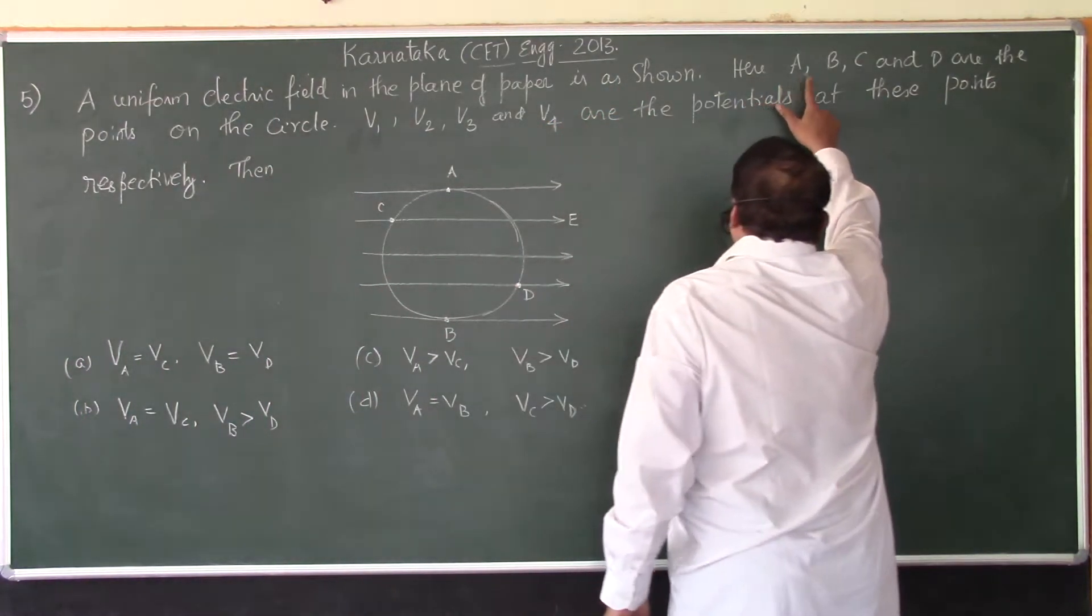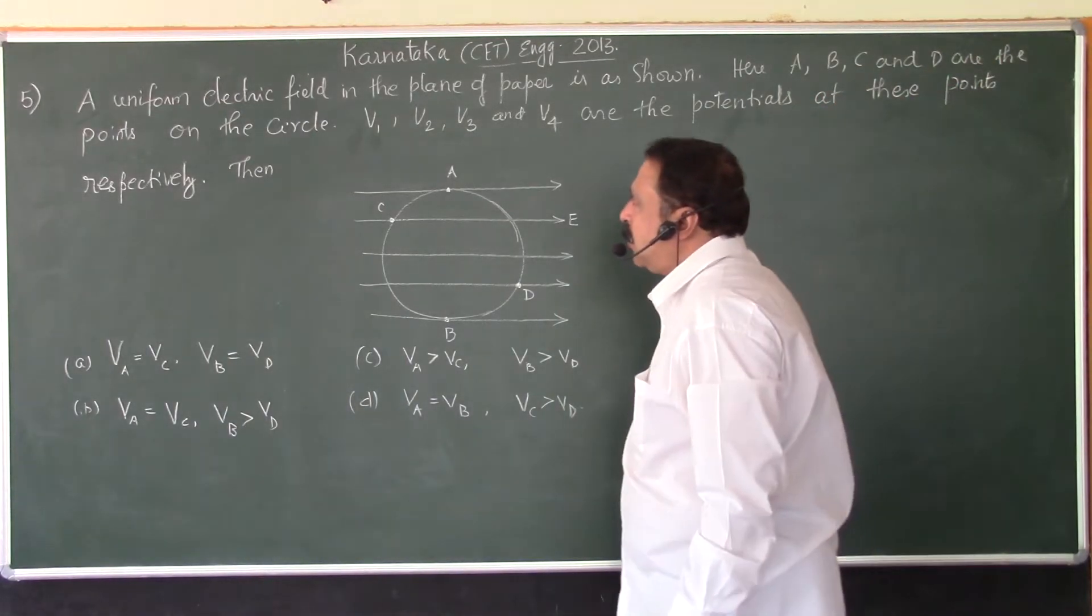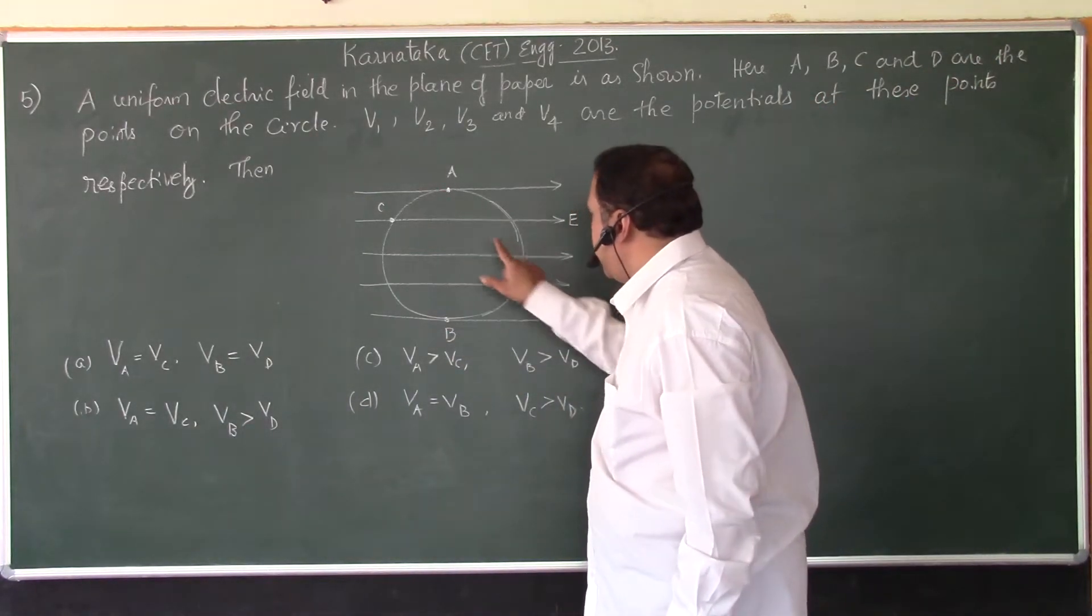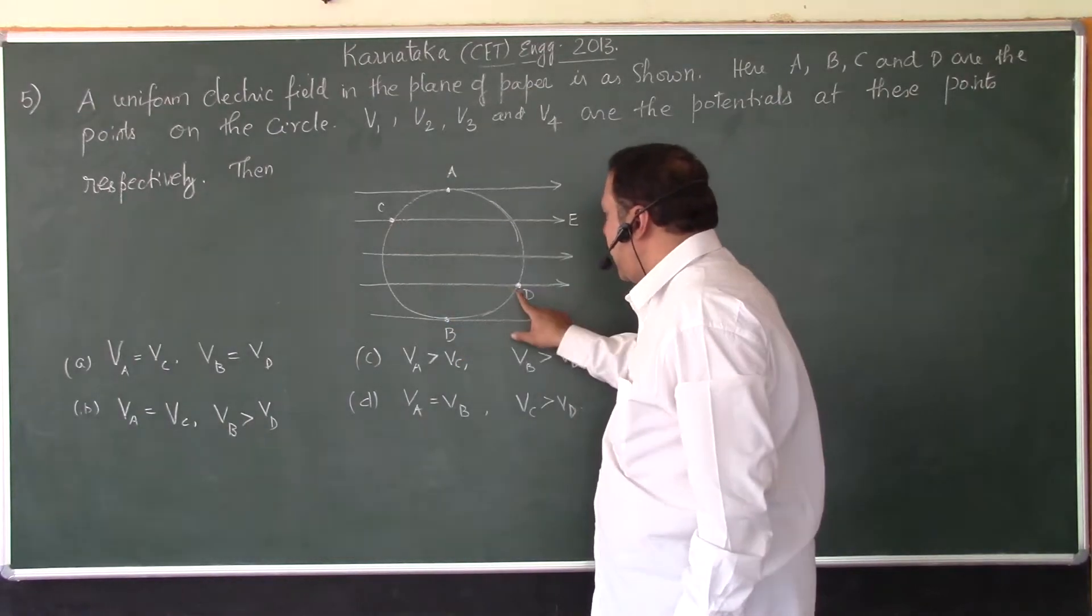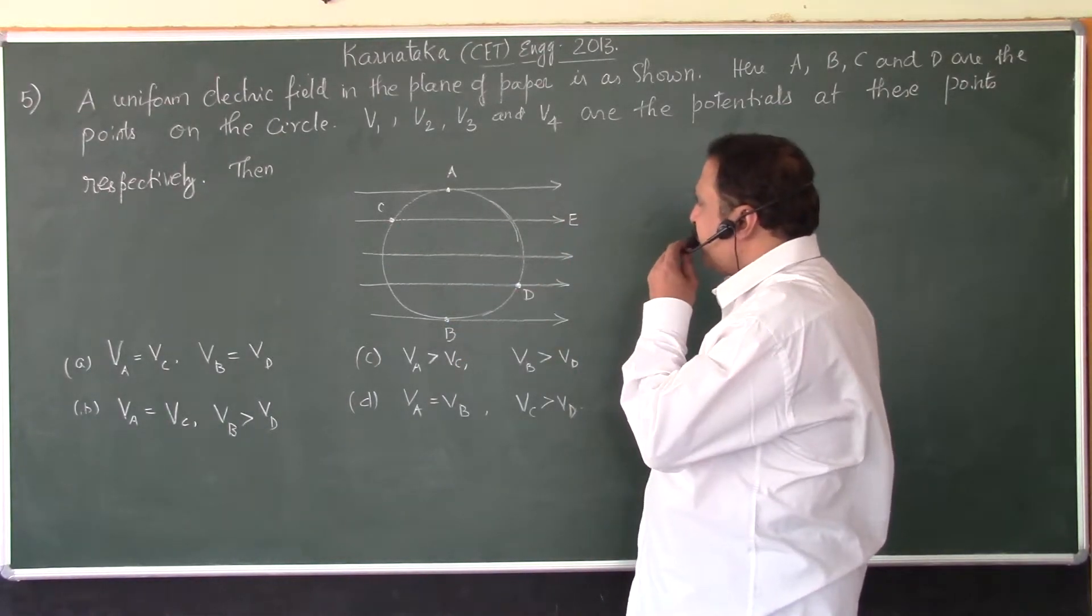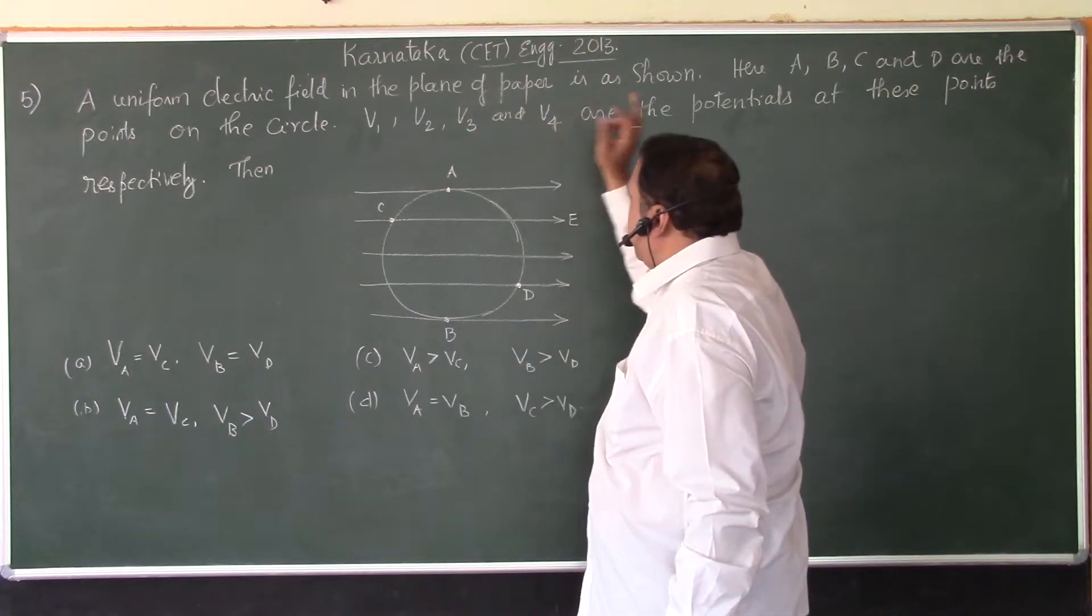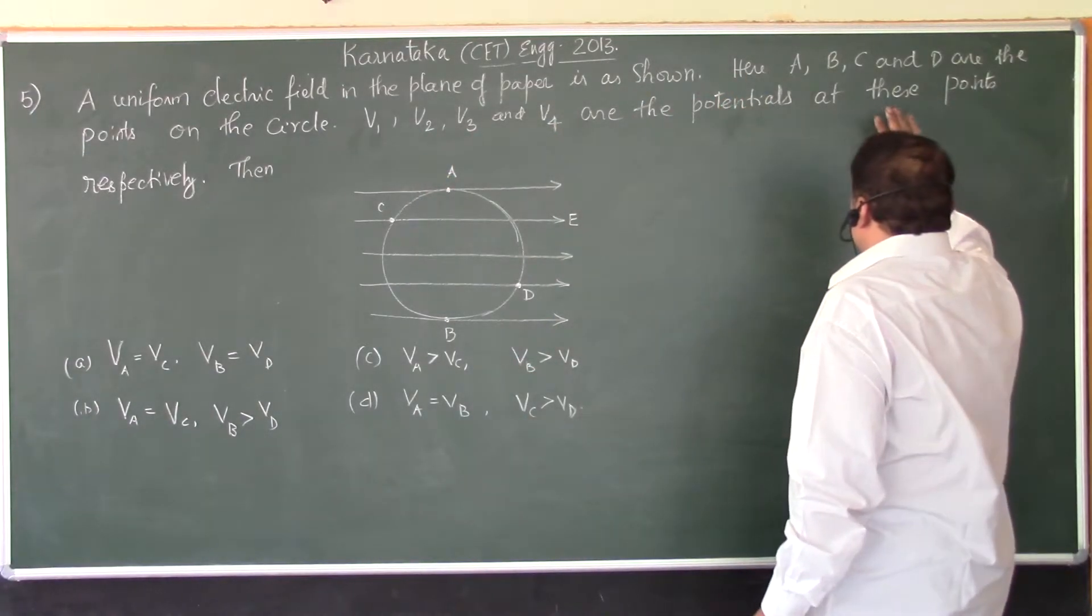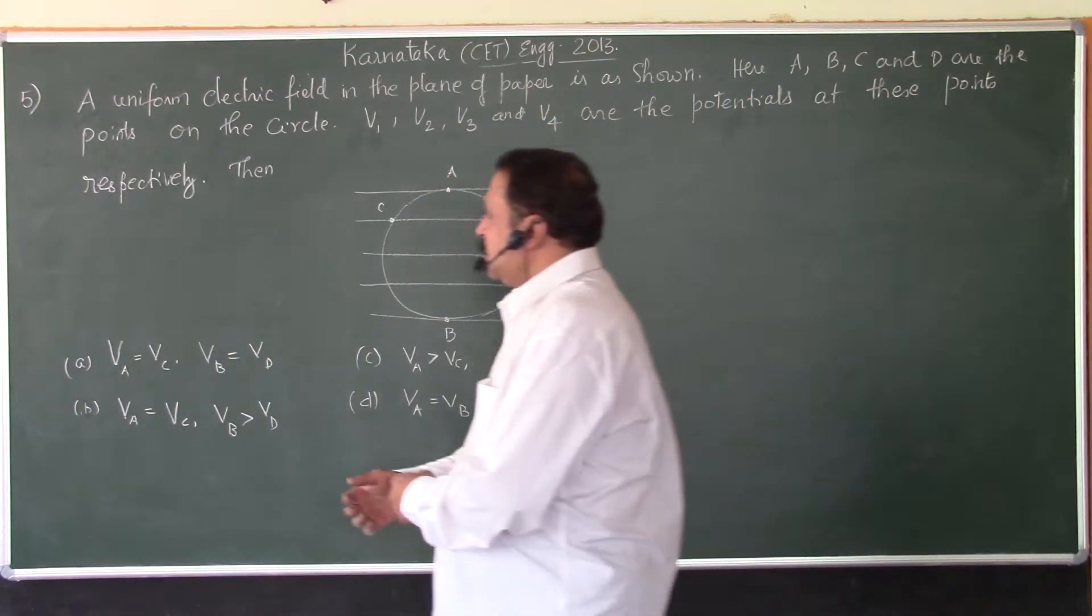Here A, B, C and D are the points on the circle. V1, V2, V3 and V4 are the potentials at these points respectively.